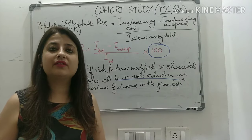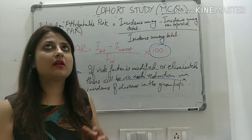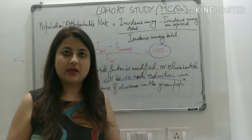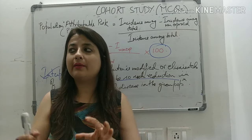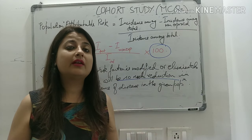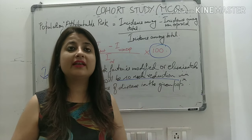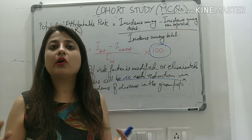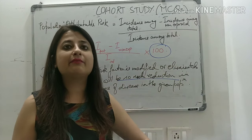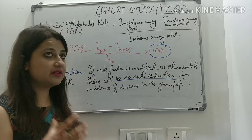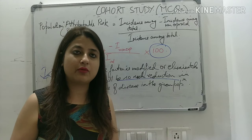Relative risk is more important to the clinician — it tells how many times more likely exposed individuals are to develop a disease compared to the non-exposed. Population attributable risk is more important from a public health point of view. This can be asked as an MCQ: which indicator is more important for public health? The answer is population attributable risk — it tells how much reduction in disease incidence would result from eliminating the risk factor.